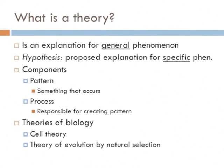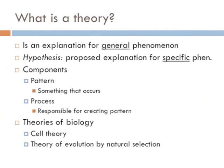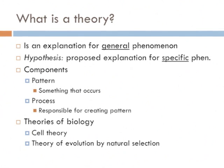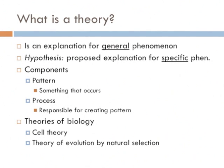Now we're going to go over some of the basics of science in general. What is a theory, and what is a hypothesis? A theory is an explanation for a general phenomenon, whereas a hypothesis is a proposed explanation for a very specific phenomenon. Components of both are pattern and process — pattern is something that occurs, and a process is something responsible for creating that pattern. There are two main theories in biology: the cell theory, and the theory of evolution by natural selection, which we'll discuss in the next few slides.